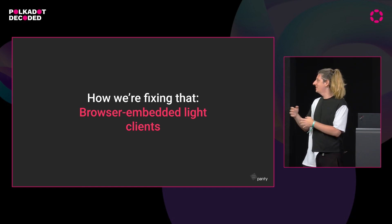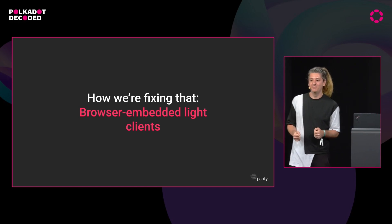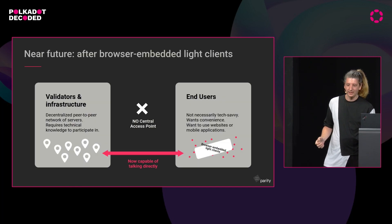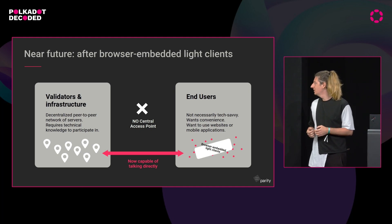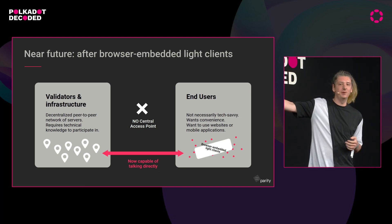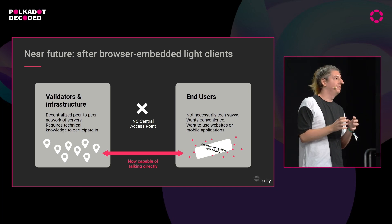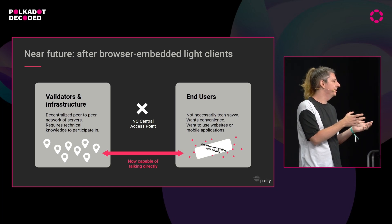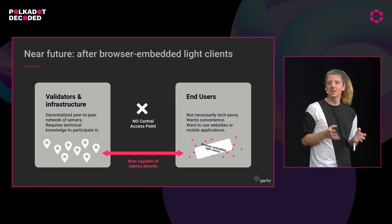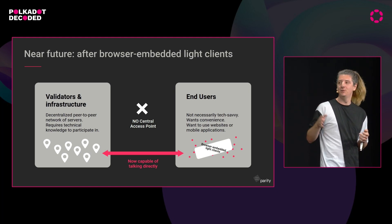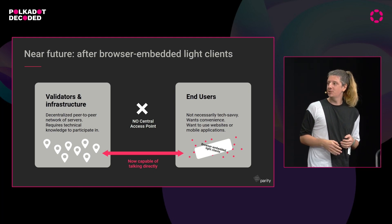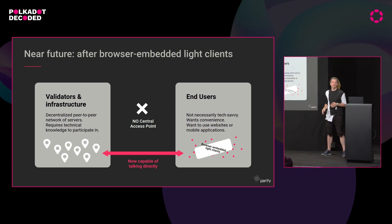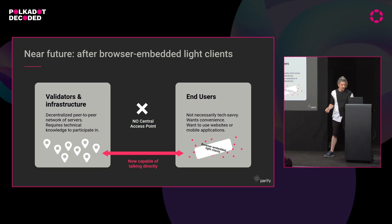The way we're fixing that is the name of the talk: Browser Embedded Light Clients. A Light Client is a different thing running on the end user machine. Instead of connecting to the central access point, the software on the end user machine connects directly to the validators and full nodes — the infrastructure. It was really just fixing the impossibility for them to talk to each other. Once they can talk to each other, it gets rid of the access point, and everyone's happy.